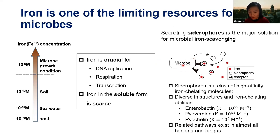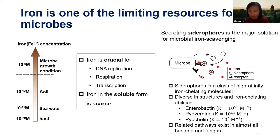Siderophores work like this: they are produced by microbes and released to the environment, becoming a public good. They bind iron with high affinity, forming an iron-siderophore complex, which is then taken back by receptors. These receptors recognize the siderophore, intake it back to the cell, so the cell can obtain this valuable iron.